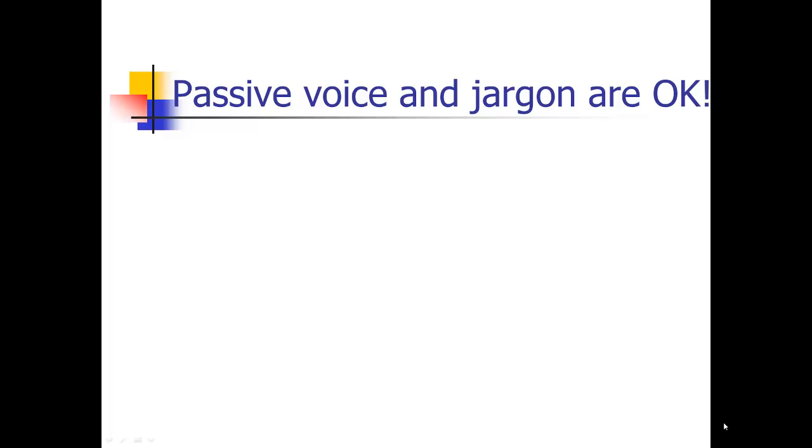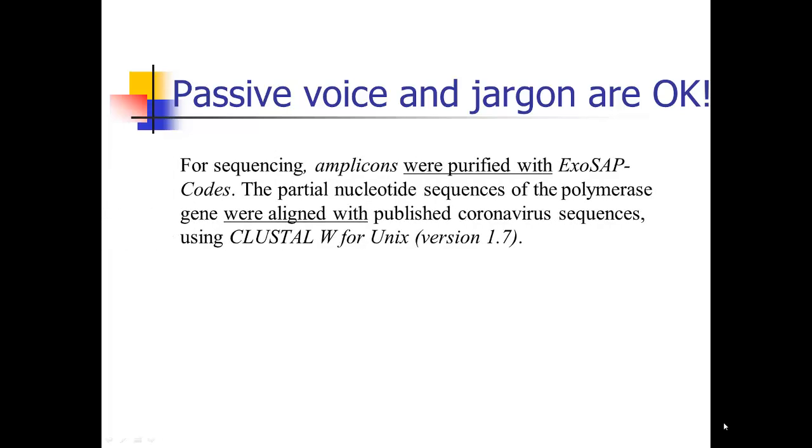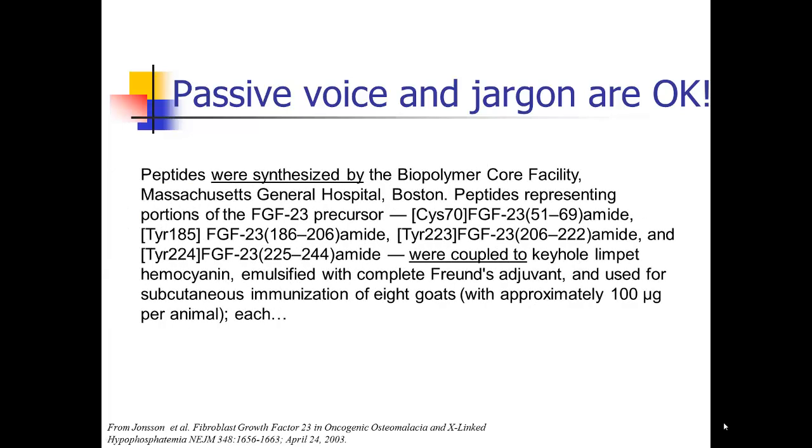Passive voice and jargon even is okay in the method section, unlike the rest of the manuscript where I'm going to tell you use less jargon, use active voice. For example, this paper: 'For sequencing, amplicons were purified with ExoSAP-Codes. The partial nucleotide sequences of the polymerase gene were aligned with published coronavirus sequences using CLUSTAL W for Unix (version 1.7).' There's a lot of jargon, it's in the passive voice. All of that jargon is appropriate there. We need all of those details about specific technical details. In the method section, perfectly appropriate. And again, okay to use the passive voice.